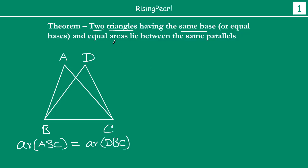Now, if you notice, the theorem is telling us: if you take two triangles having the same base or equal bases. We have shown here the same base — let's say condition 1. Now, what about equal bases? So let's draw that scenario as well.